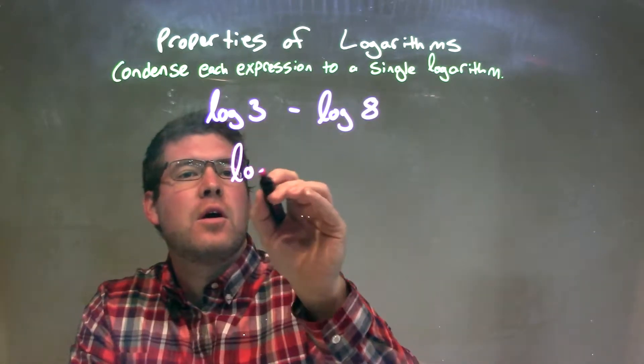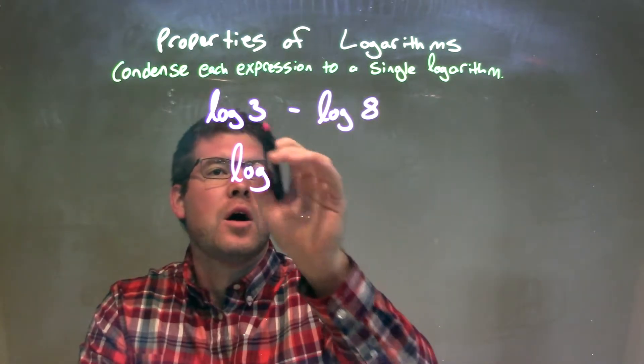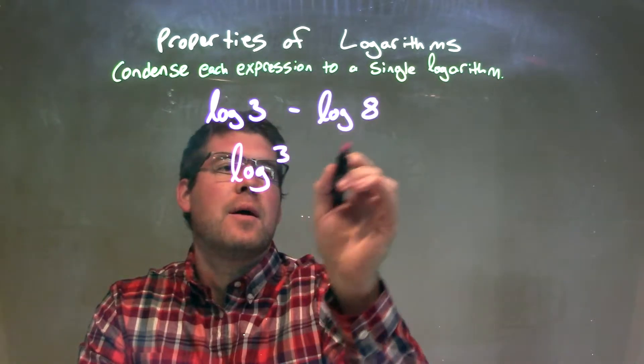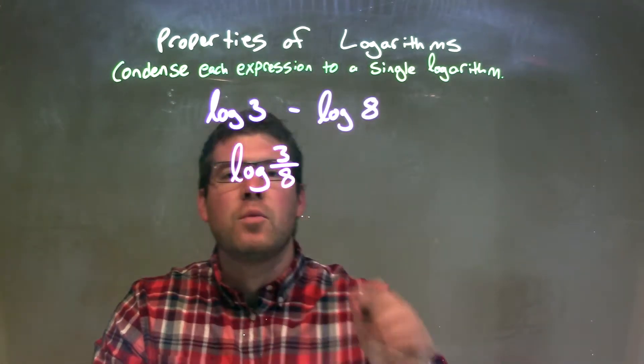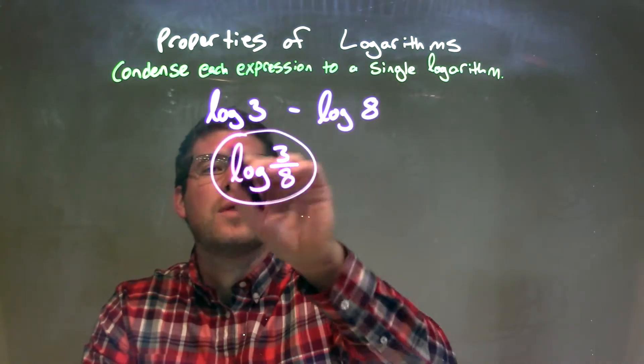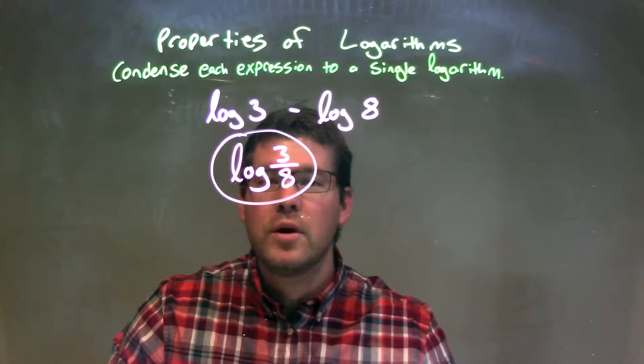And so, we have the log, we'll bring it together as one big log, log of the first one, 3 minus the 8, 3 divided by 8. And there we have it. We have our final answer here. No more that we can simplify. Log of 3 over 8.